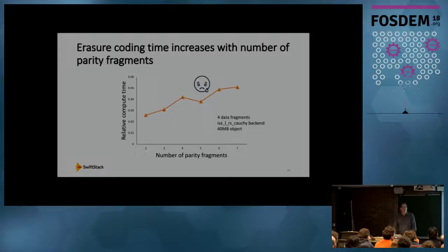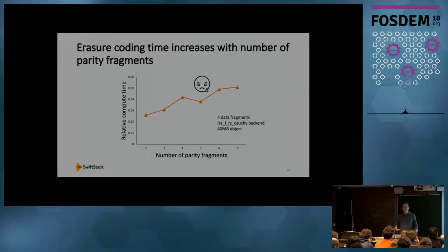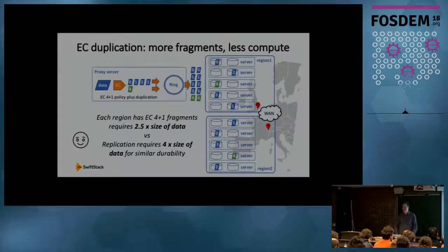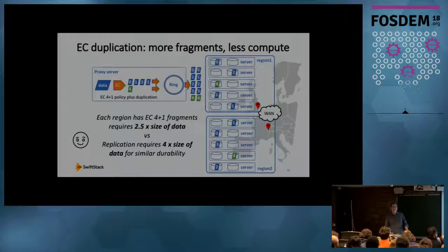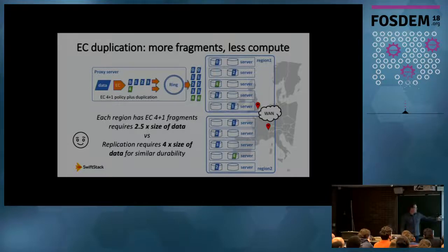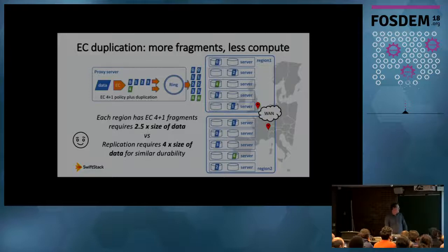So we had another think. Someone clever made the observation that although we want five fragments in each region, and fragments within each region need to be unique with respect to each other, they don't need to be different fragments between the two regions. So instead of calculating more parity fragments, we can just duplicate the set of fragments we have and spread them across the two regions. This means we drop back to four data plus one parity fragment — much less compute burden — duplicate the set, distribute across the cluster, and achieve the same result: 2.5x data size with equivalent durability and data locality to a four-replica policy.